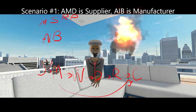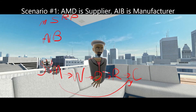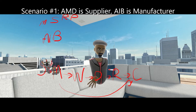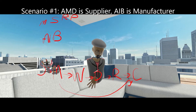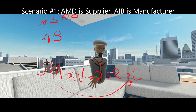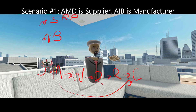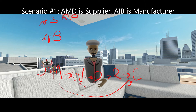PowerColor sets that MSRP for you, the consumer. The chain still flows: the retailer then sells that card based on what they think they should charge, using that MSRP as a guide.